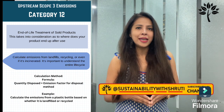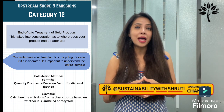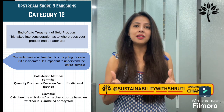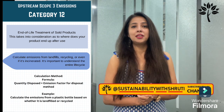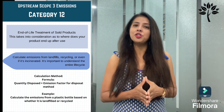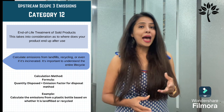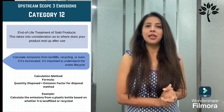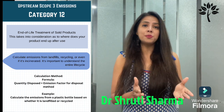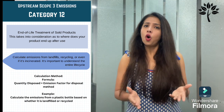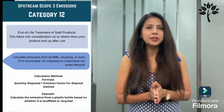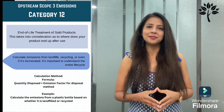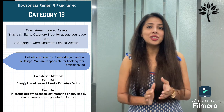Category 12 is end-of-life treatment of sold products — where does your product end up after use? Calculate emissions from landfilling, recycling, or incineration; it's important to understand the entire lifecycle. The calculation method is: quantity disposed × emission factor for disposal method. Activity data includes quantity of product at end of life and disposal methods. Emission factors depend on disposal method — recycling, landfill, or incineration. For example, calculate the emissions from a plastic bottle based on whether it is landfilled or incinerated.